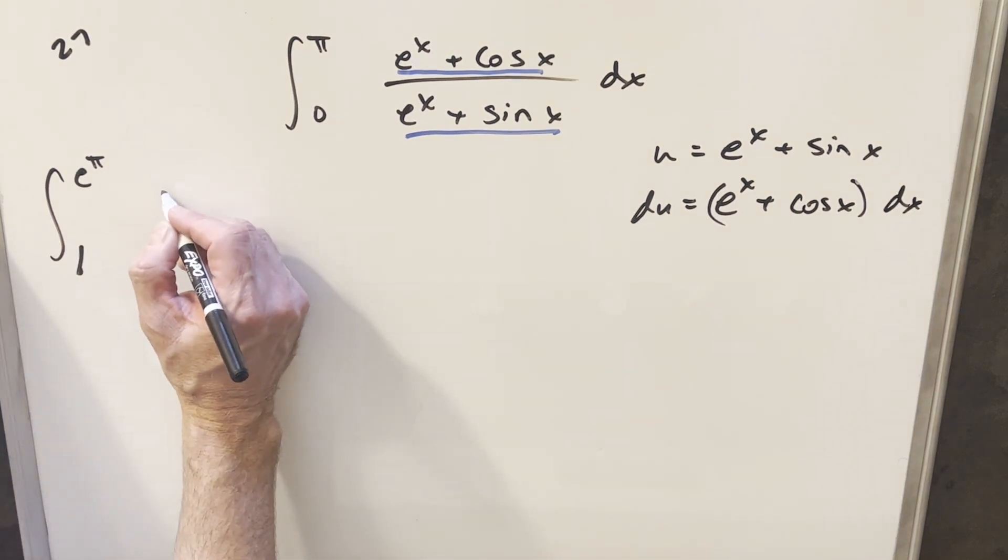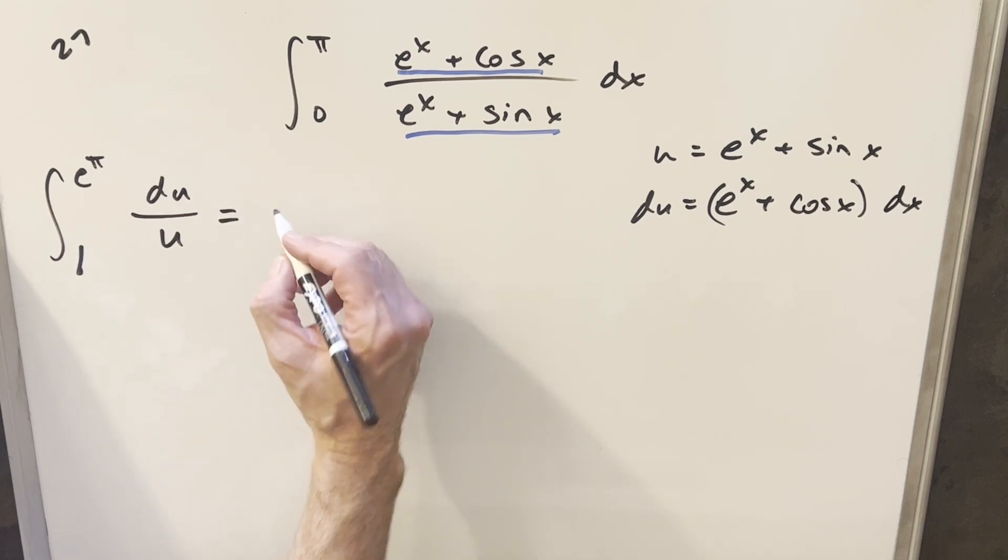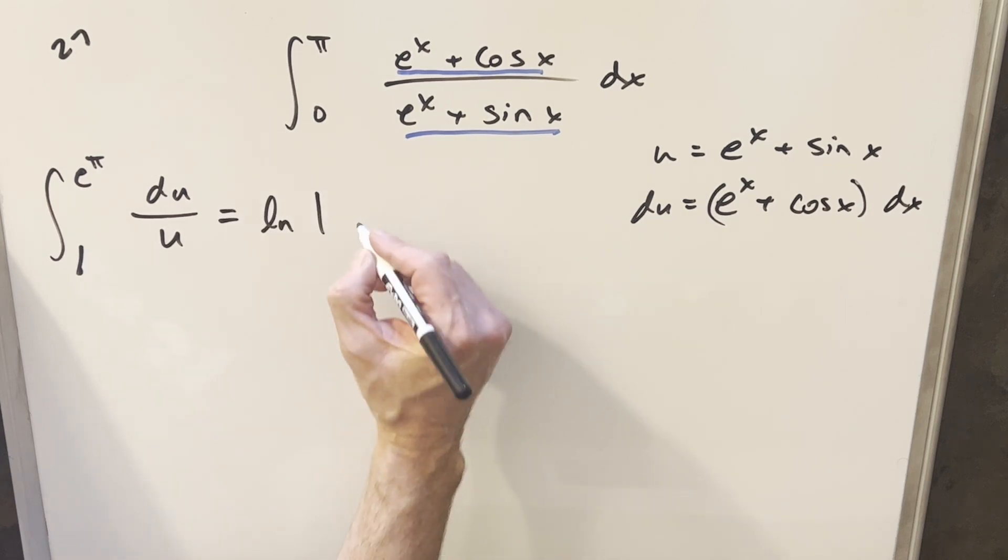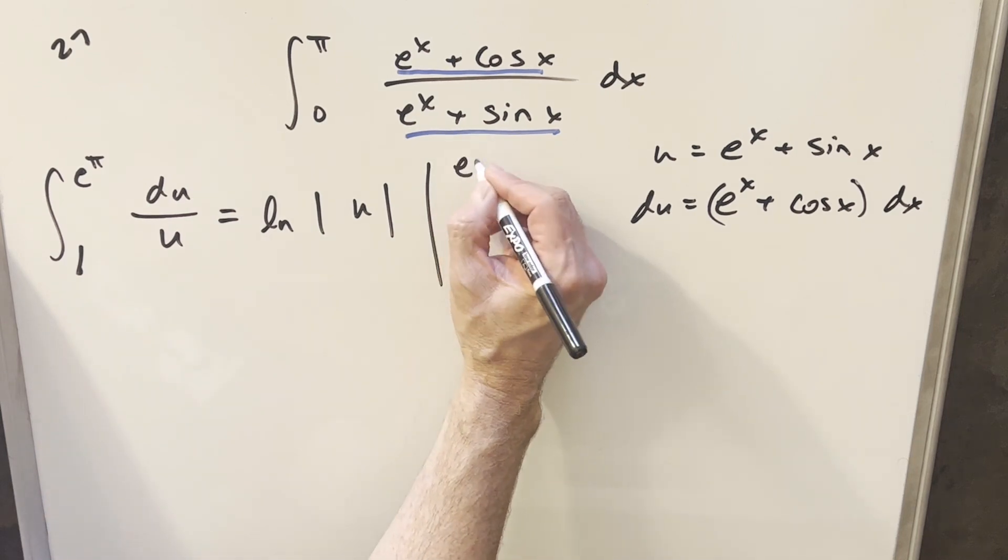Our integral just becomes du/u. Very simple—we integrate this to get ln|u|, and we evaluate from 1 to e^π.